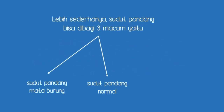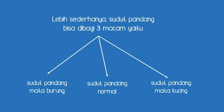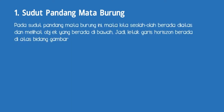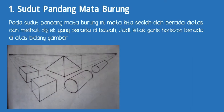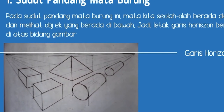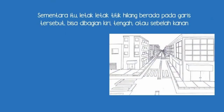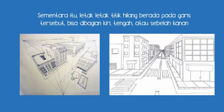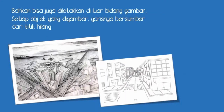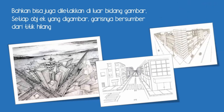Lebih sederhananya, sudut pandang bisa dibagi menjadi tiga macam. Pertama, sudut pandang mata burung. Pada sudut pandang mata burung ini, mata kita seolah-olah berada di atas dan melihat objek yang berada di bawah. Letak garis horizon berada di atas bidang gambar, sementara letak titik hilang berada pada garis tersebut, bisa di bagian kiri, tengah, atau sebelah kanan, bahkan bisa juga diletakkan di luar bidang gambar. Setiap objek yang digambar, garisnya bersumber dari titik hilang.